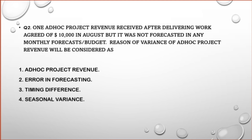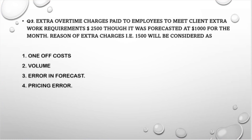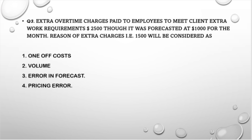Question 3: Extra overtime charges paid to employees to meet client extra work requirements were $2,500, though it was forecasted for the same period at $1,000. So we forecasted $1,000 for overtime charges that month, but the actual charges paid were $2,500. The reason for the extra $1,500 will be considered as: (1) One-off cost, (2) Volume, (3) Error in forecast, (4) Pricing error.